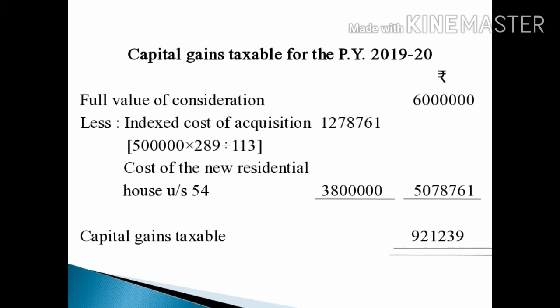The first year the asset was held is 2004-05, with a Cost Inflation Index of 113. Compared to the 1.4.2001 index, 2004-05 is later, so we use the 2004-05 index of 113. Substituting into the Indexed Cost of Acquisition formula, the result comes to Rs. 12,78,761.